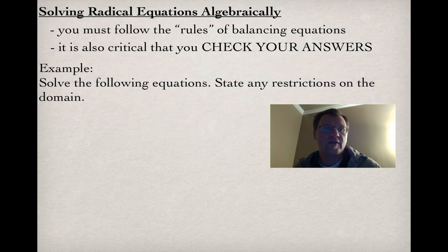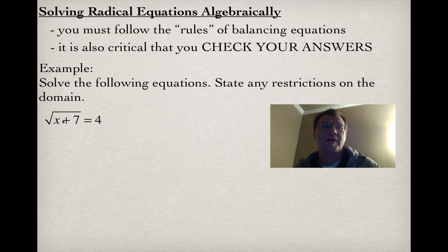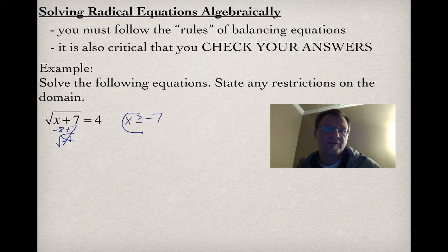Solve the following equations and state any restrictions on the domain. A restriction on the domain is a value for x that you cannot have — basically, is there something that if I plug in for x I'm going to get a square root of a negative number? That would mean x has to be greater than or equal to negative 7. If I put something less than negative 7 in, I get negative 1 under the root, which I cannot take the square root of. So my restriction is x ≥ −7.